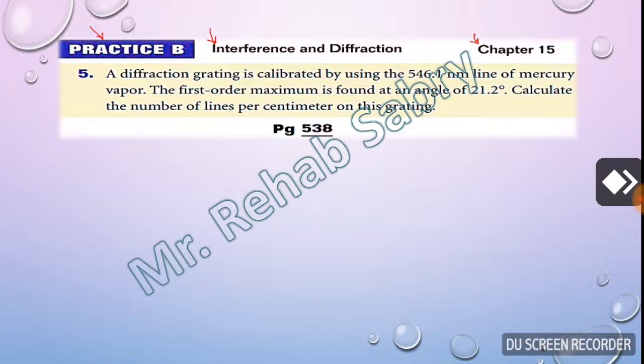Let's read it together and extract givens as usual. A diffraction grating is calibrated by using the 546.1 nm line of mercury vapor. I think it's clear this is the wavelength which has the symbol lambda.